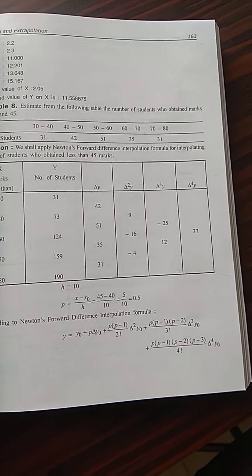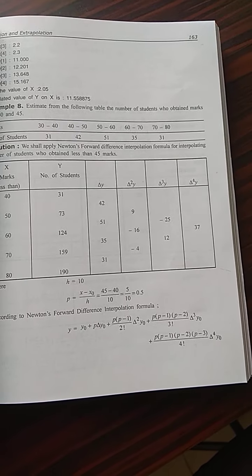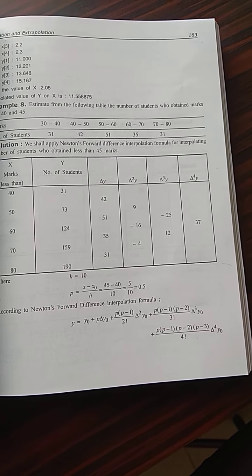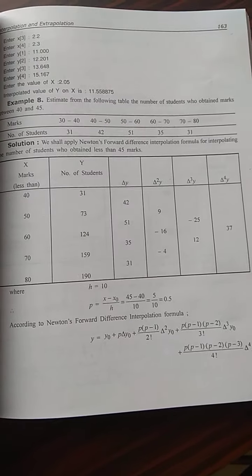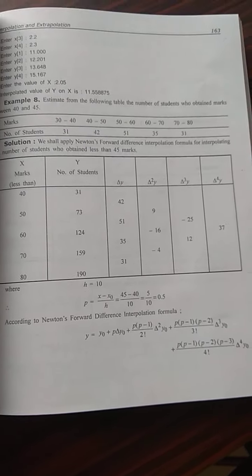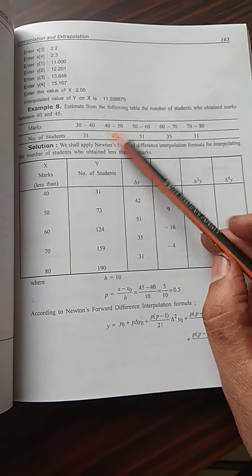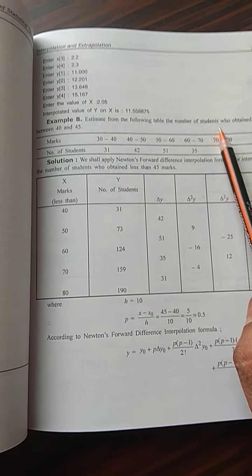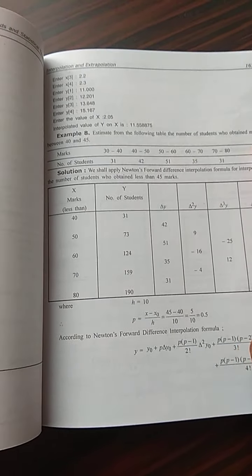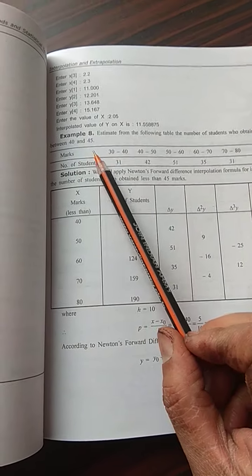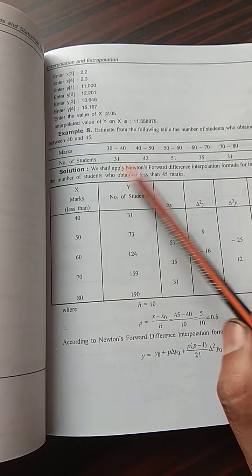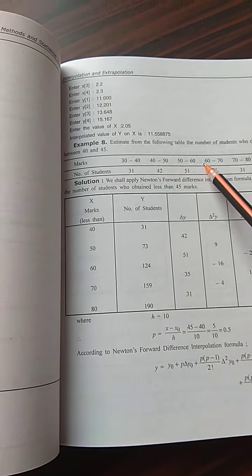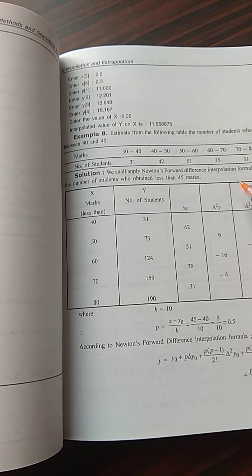Dear students, today we will learn about Newton's forward difference interpolation formula and we are going to solve a question. The question is: estimate from the following table the number of students who obtained marks between 40 and 45. So we have to find the number of students who obtained marks between 40 and 45.